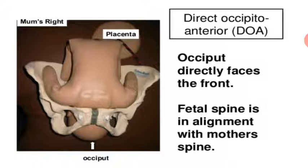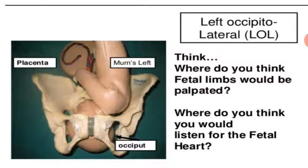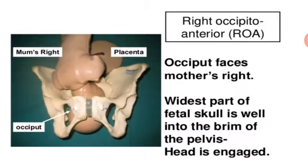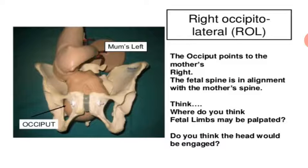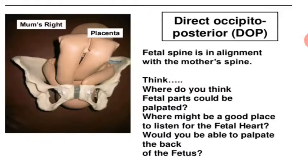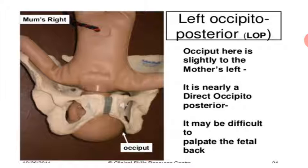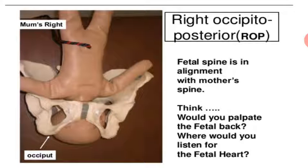Direct occipital anterior means the occiput faces the mother's anterior side. Left occipital anterior means the occiput is toward the mother's left and anterior side. Right occipital anterior means the occiput is toward the mother's right side. Left occipital lateral means the occiput is on the left lateral side. Direct occipital posterior means the occiput faces the posterior. Left occipital posterior means the occiput is on the mother's left side posteriorly, and right occipital posterior means the occiput is on the mother's right side posteriorly.